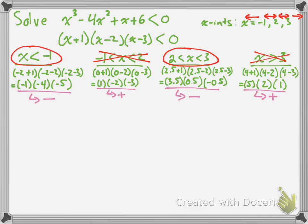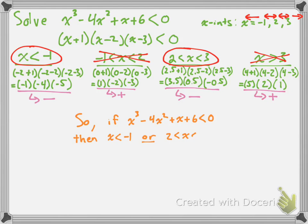So the only solutions are x values less than -1, and x values between 2 and 3. We can write this as: x < -1 or 2 < x < 3. This is how to solve a factorable inequality algebraically. Take care.